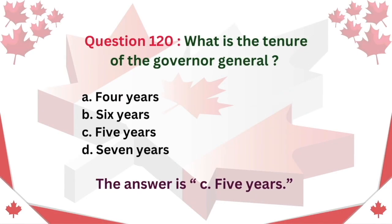Question 120: What is the tenure of the Governor General? A. Four years. B. Six years. C. Five years. D. Seven years. The answer is C. Five years.